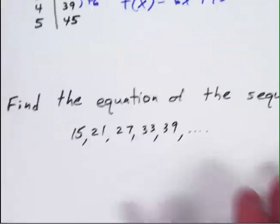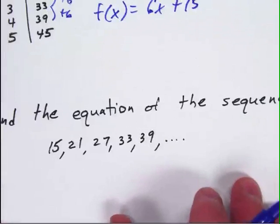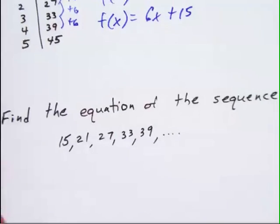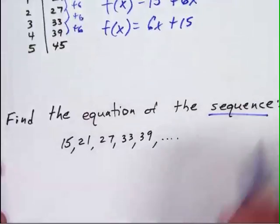Second would be a plain old number sequence. So the second example is, find the equation of the sequence. And your sequence now is just a plain old list of numbers like this.